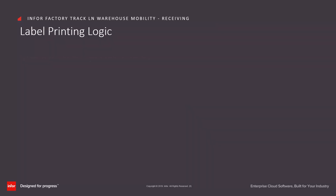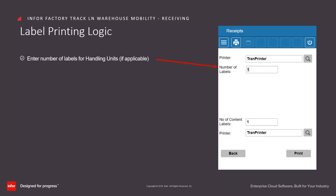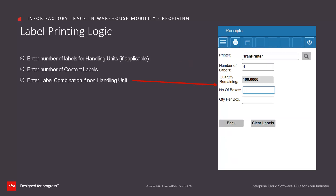Receiving also supports label printing. If the goods being received were for a handling unit, we can enter the number of labels for the handling units we want to print, and we can also enter the number of content labels if we wish to print labels for the individual items in the handling unit. If the item being received was not part of a handling unit, this form will be produced and the operator can enter a label combination to specify how many labels should be printed. In this case, the receipt was for a quantity of 100 — we could say we want two labels of 50 each, four labels of 25 each, or even three labels of 30 and one label of 10.